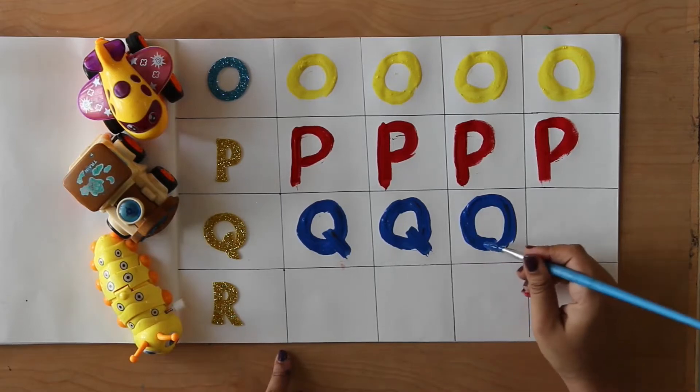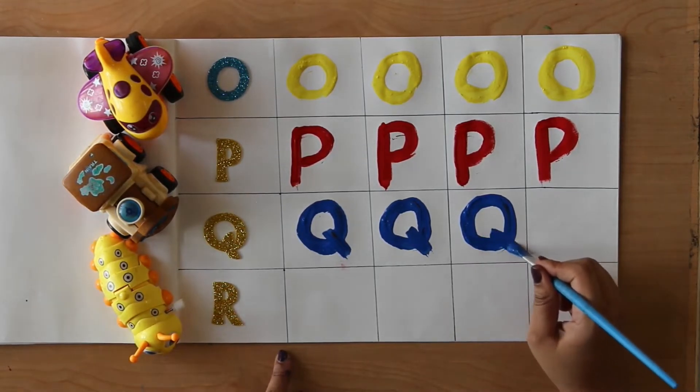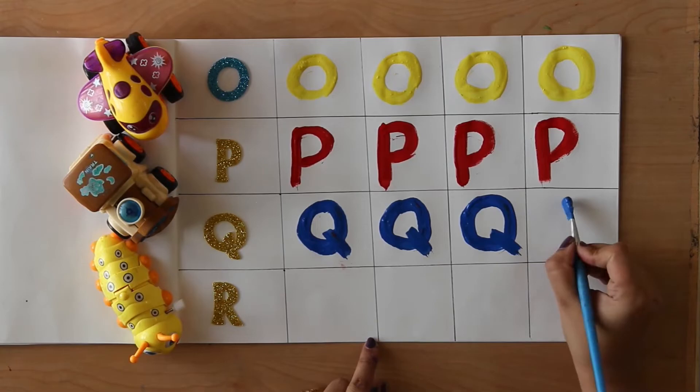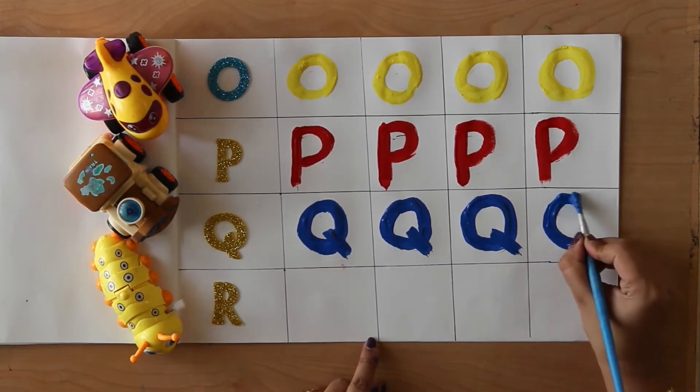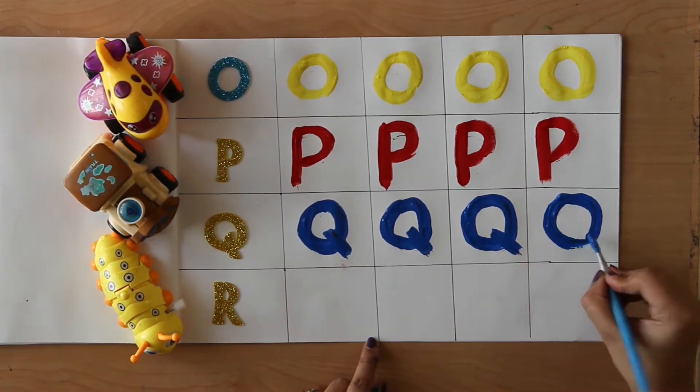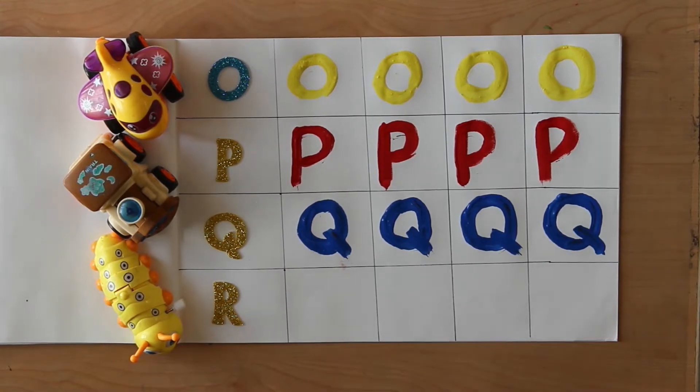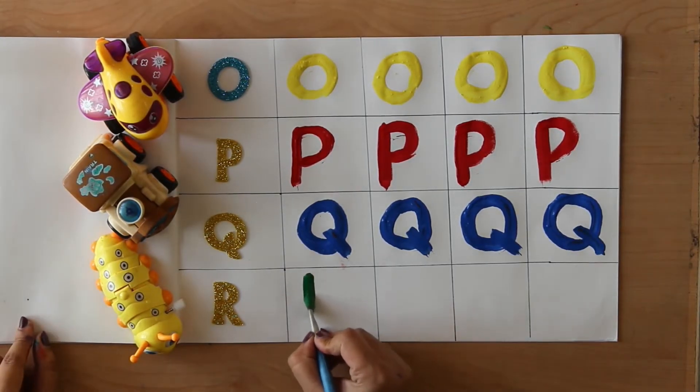Q for Q. Q means Qatar. Q. Q for quilt. Quilt means Rajai. Green color.